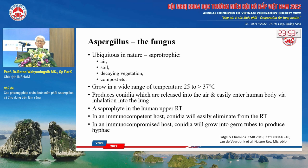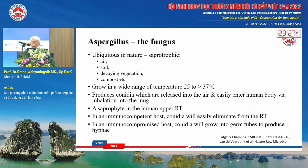Aspergillus is a fungus that can be found easily in our environment. You can find it in the air, in the soil, in decaying vegetation, in compost, or even on old walls. It grows in a wide range of temperatures, from 25 to 37 degrees Celsius, which means it can grow in our body and cause diseases. It easily enters our respiratory tract because it is so abundant in the environment.